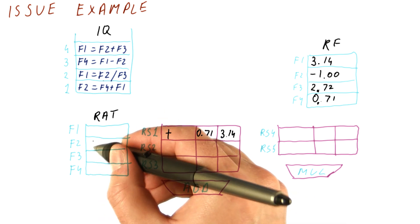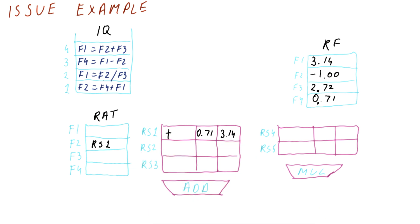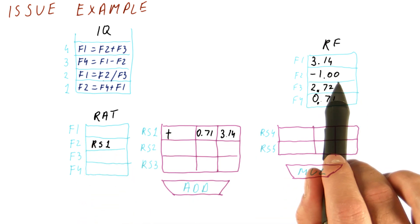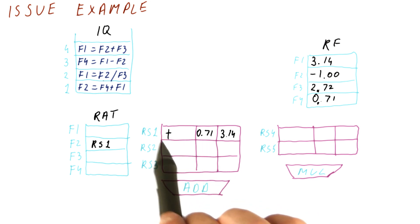So here, we will write RS1. So future instructions that want F2 are not going to read minus 1. They're going to wait for this result to be produced. So this is the renaming of the very first instruction.